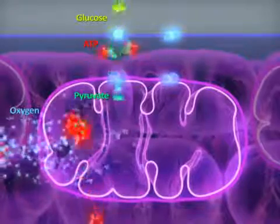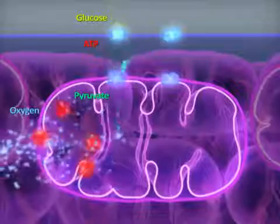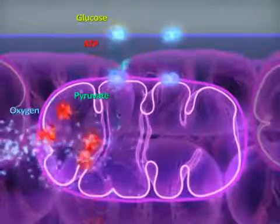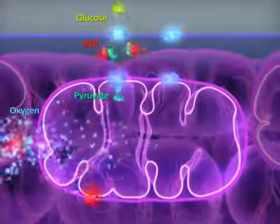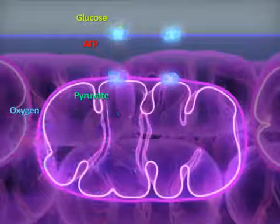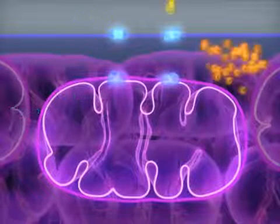Pyruvate is then anaerobically metabolized in the mitochondria, where significant amounts of ATP molecules are gained through oxidative phosphorylation.